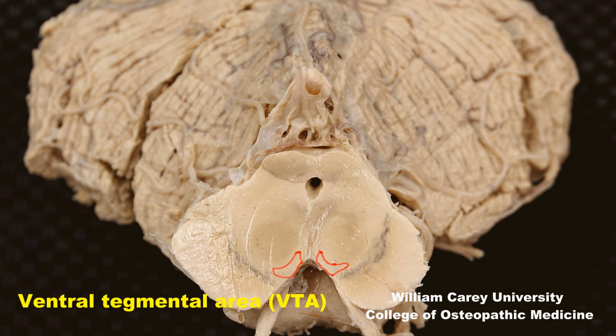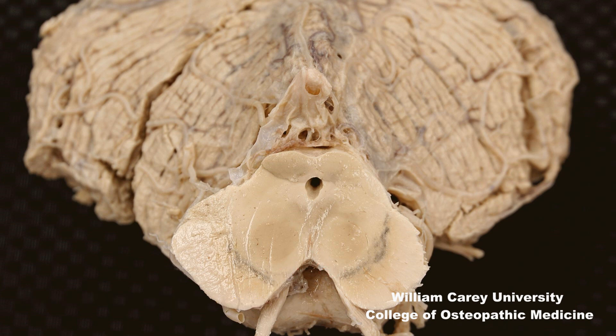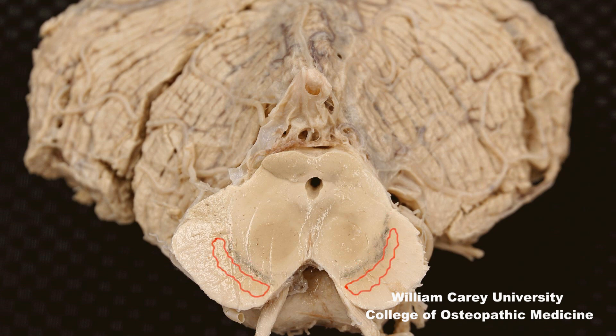The VTA sends dopaminergic projections to the ventral striatum — the previously identified nucleus accumbens — and in addition to nucleus accumbens, the VTA also sends dopamine projections to the prefrontal cortex. Therefore, with the identification of substantia nigra compact zone, substantia nigra reticular zone, and the ventral tegmental area, our survey of basal ganglia related components is now complete.